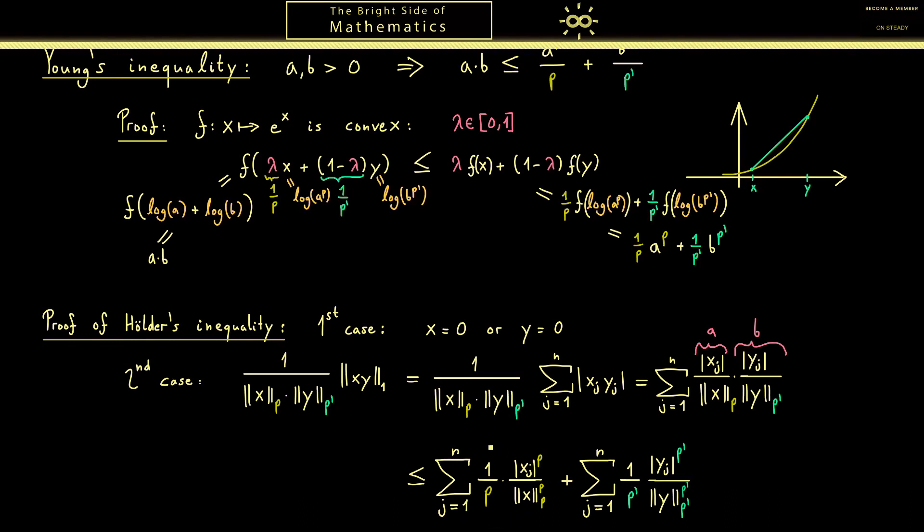Hence the only things that remain is 1 over p here and 1 over p' here. And by the definition of the Hölder conjugate, this is simply 1. And with this we have proven Hölder's inequality because you can bring this one on the right hand side again if you want.